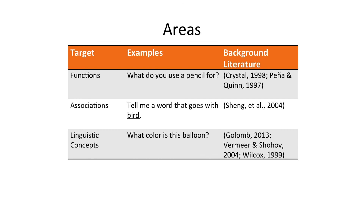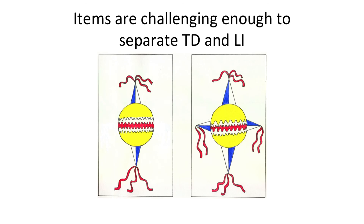As we developed the actual items for the test, we focused on items that would be challenging enough to separate typically developing children from those with language impairment. So instead of having single word items that children would just name or recognize, we had items that children might have to explain differences for. For example, here are two piñatas — they're different — and we would ask children to tell us what's different about them. Children would say something about the points or that there's a different number of points.